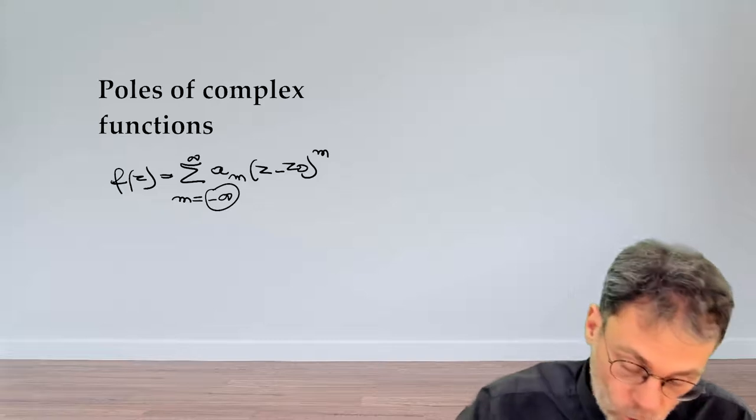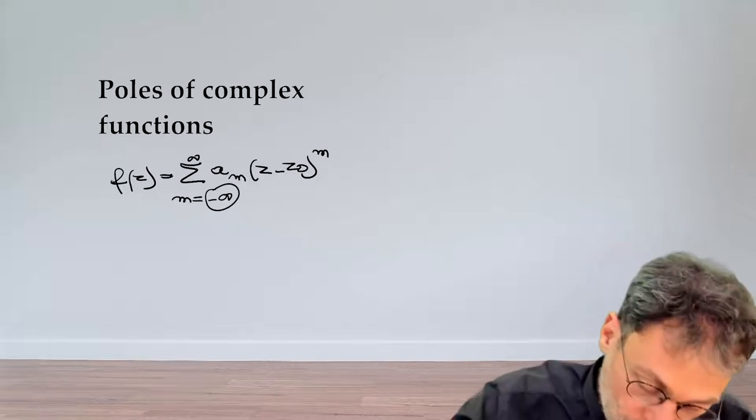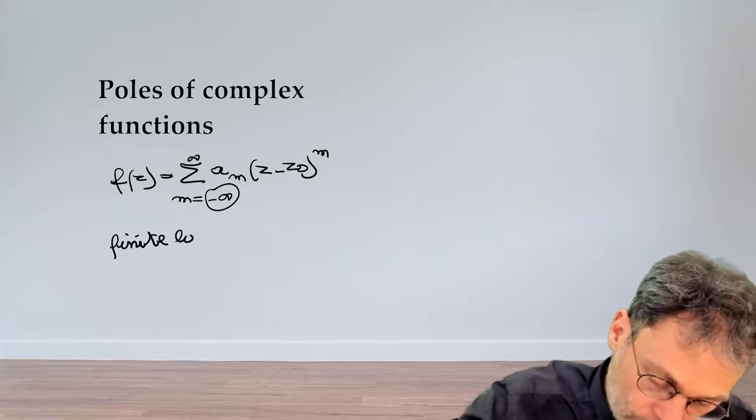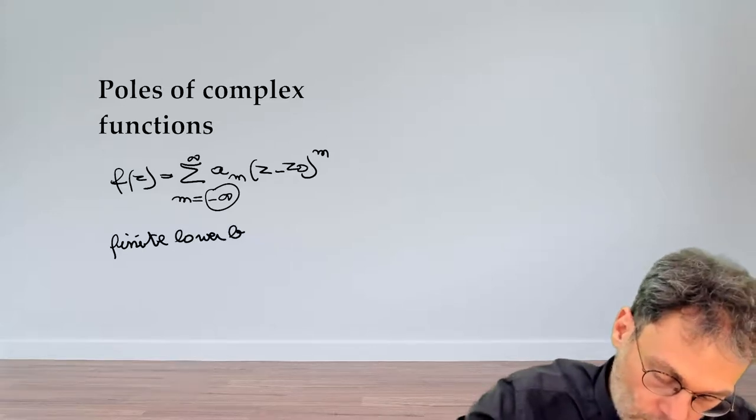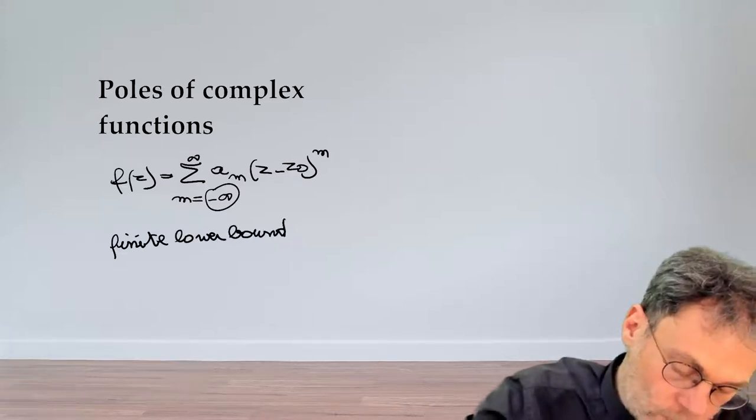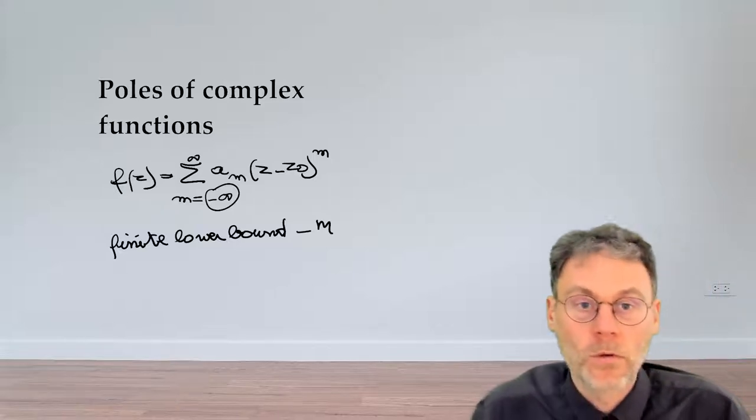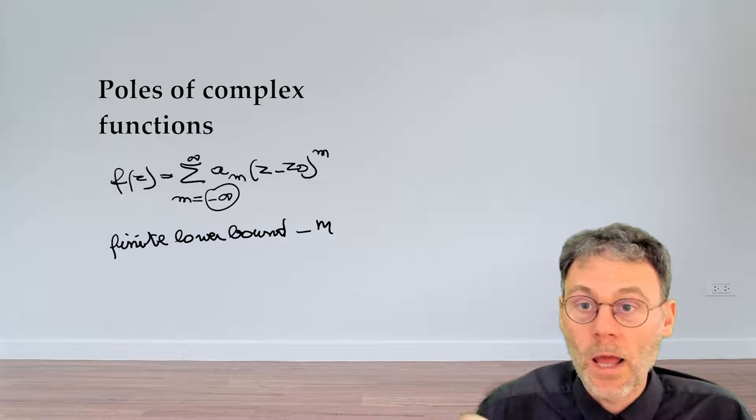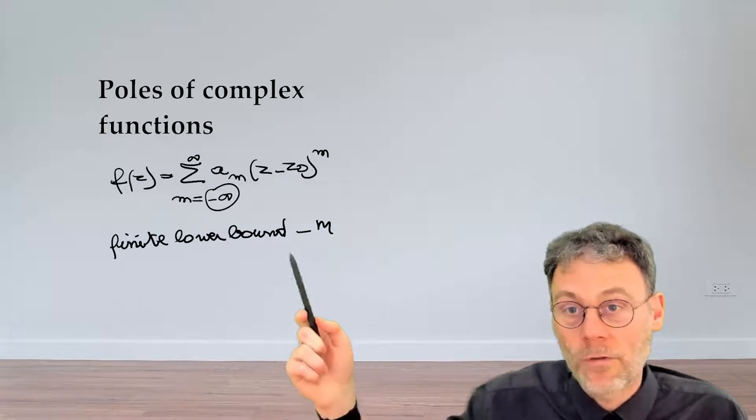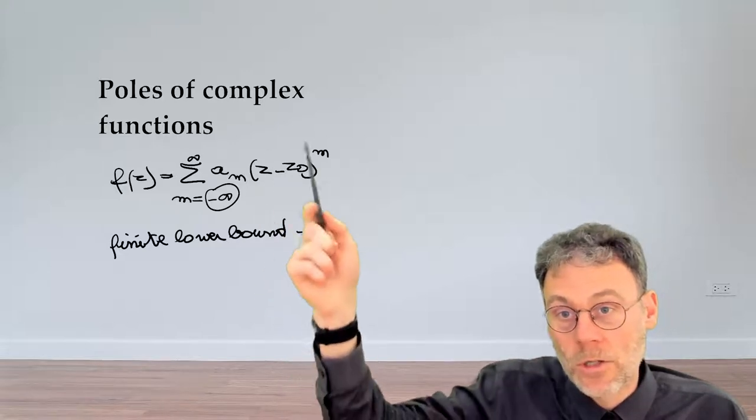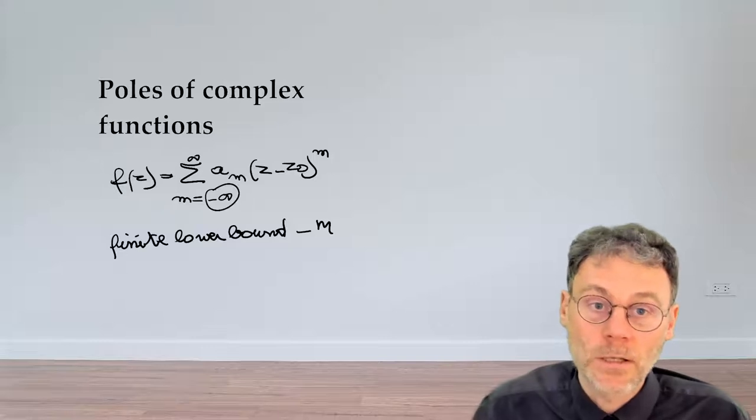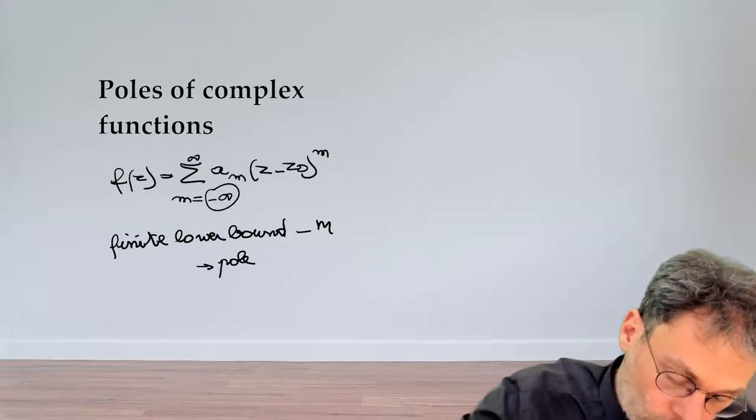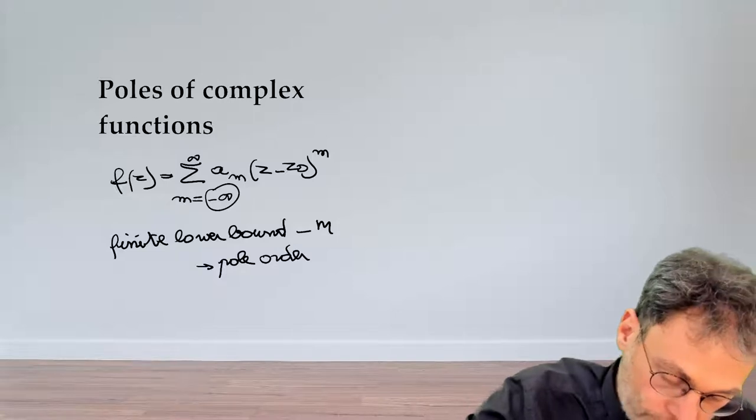Let's say that our lower bound is finite. So if you have a finite lower bound, and let's call that bound minus m with m a positive number and minus m then a negative number. If that's the case, if your Laurent series starts at a certain negative power of z minus z0, then we say that you have a pole of order m.